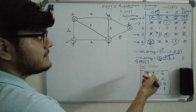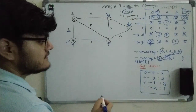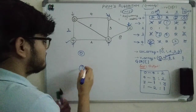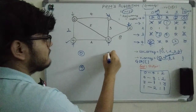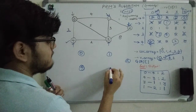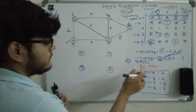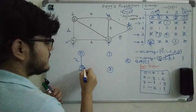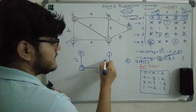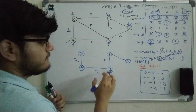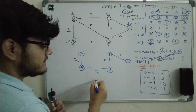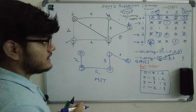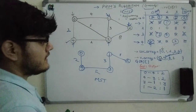To construct the minimum spanning tree: vertices are 0, 4, 1, 2, and 3. The edges are: 0→4 with cost 2, 4→3 with cost 2, 3→1 with cost 3, and 1→2 with cost 1. This is the final MST obtained using Prim's algorithm, and that's how we find the minimum spanning tree of a given graph.